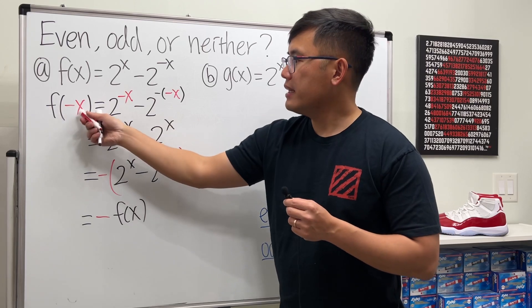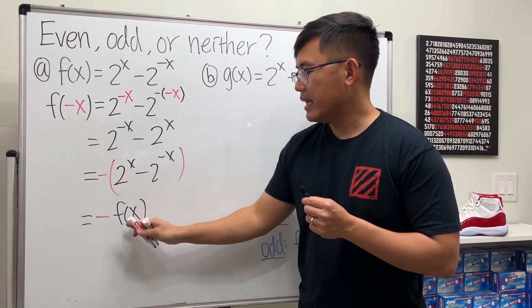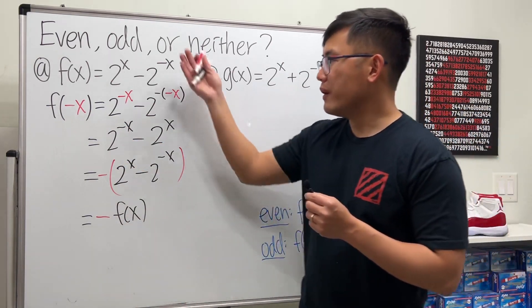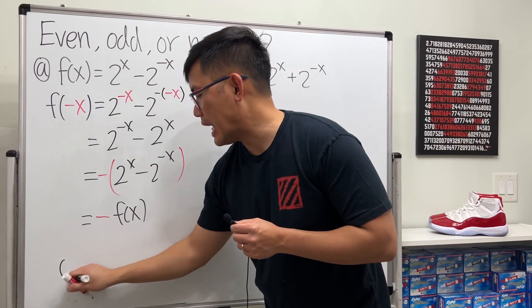We have the negative on the outside and then the original, so f of negative x equals negative f of x. Therefore this function is odd.